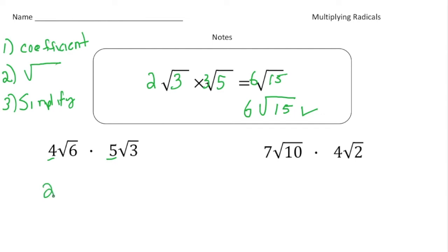So here we have 4 radical 6 times 5 radical 3. So again, step one, multiply the coefficients, so 4 times 5 gives us 20. Now we need to multiply what's inside the radical sign, so 6 times 3 gives us 18. And now we've got to see if we can simplify this.